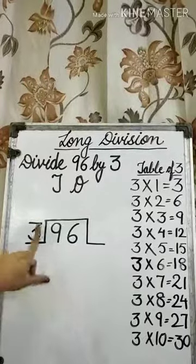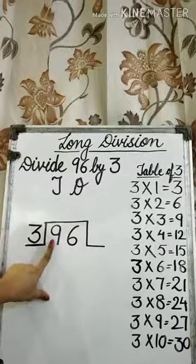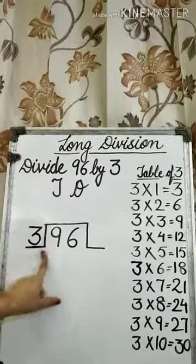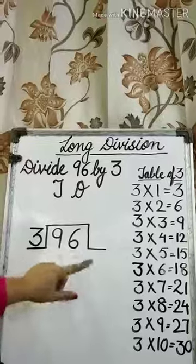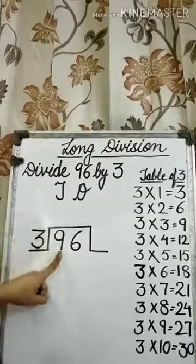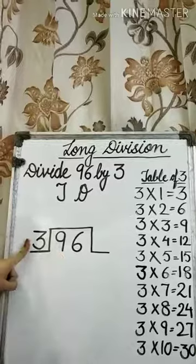we start with the left hand side. That is the largest unit of the dividend. So, let's start. First of all, we have to divide 9 by 3.